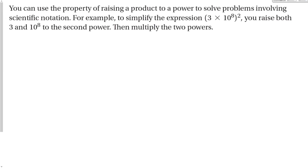We can use the property of raising a product to a power to solve problems involving scientific notation. For example, to simplify (3 times 10 to the 8th) squared, raise both the 3 and the 10 to the 8th to the 2nd power. So it would be 9 times 10 to the 16th — power to a power means you multiply exponents, not add them.